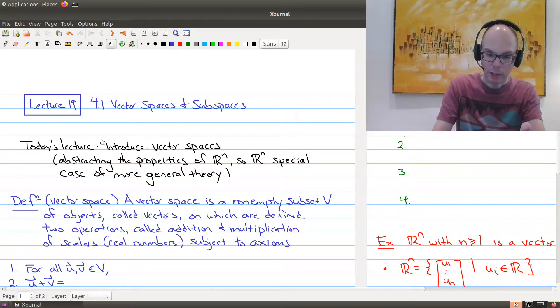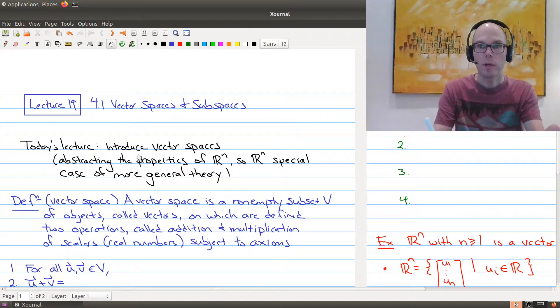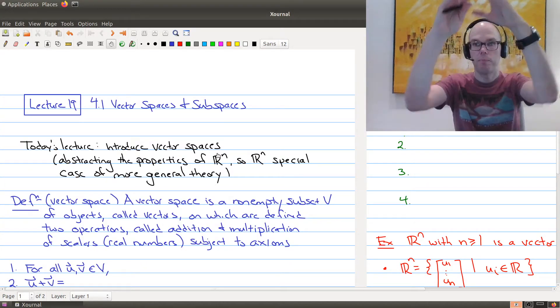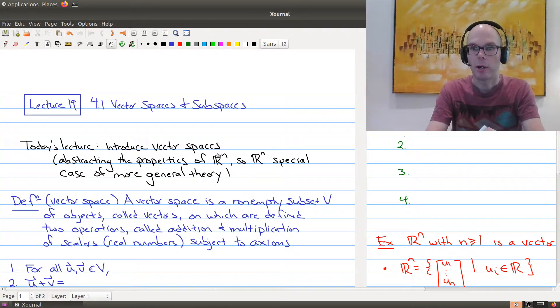So the goal of today's lecture is to introduce vector spaces. And what you want to keep in the back of your mind while we're doing this is what we're trying to do is abstract the properties of Rn. So we're looking for a bigger theory in which Rn, the set of vectors and tuples, becomes a special case of a much more general theory.